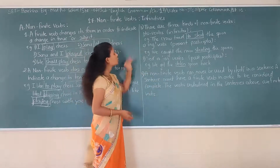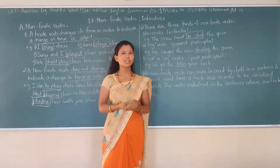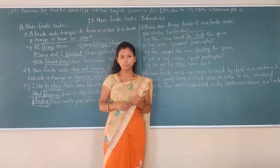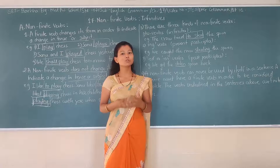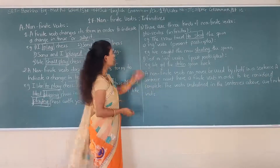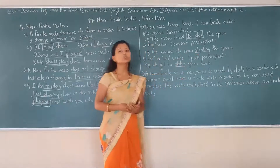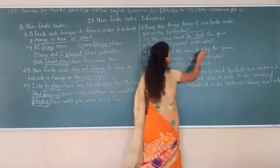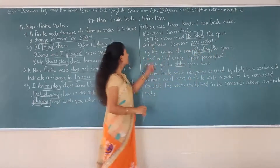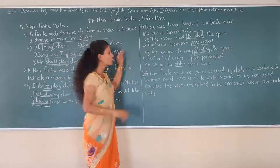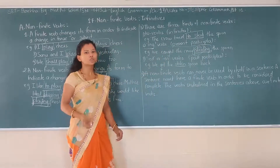The second type is ing-verbs. In this, we use the present participle form. You know that the present participle uses the ing form. See the example: 'Because the probe is stealing the spoon' — so 'stealing' is the present participle. That is the ing-verb; you add ing to your verb, so 'steal' becomes 'stealing.'